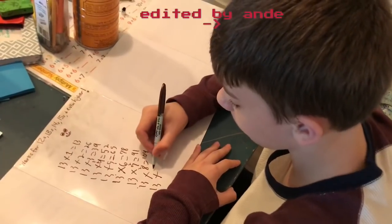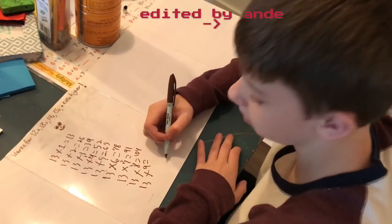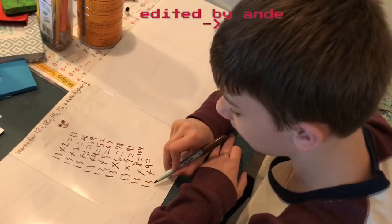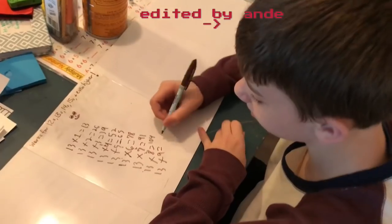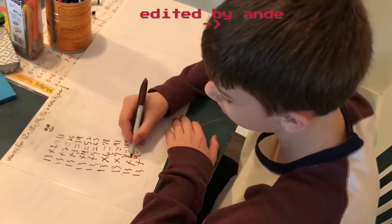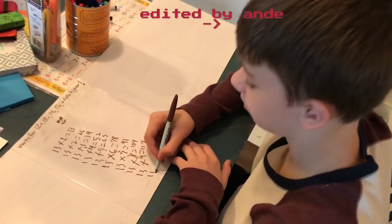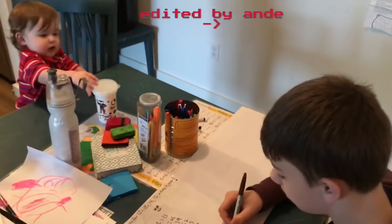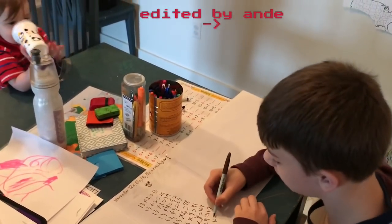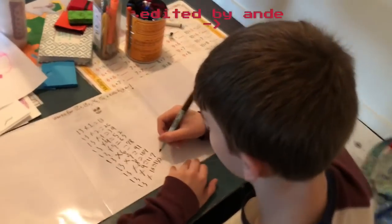13 times 9 equals, now with the 9s you can do the fingers trick, but that won't work for 11 and up. So 9 times 3 equals 27. 7, then 2, that's 117. 13 times 10, that's very simple, just put the 0 on the end of the 13, 130.